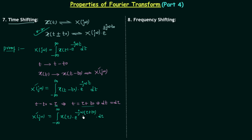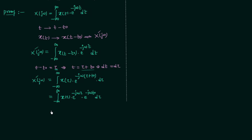The exponent e^(−jω(τ + t0)) can be written as two separate exponentials: e^(−jωτ) multiplied by e^(−jωt0). The term e^(−jωt0) has no τ in it, so it acts as a constant with respect to τ and can be taken outside the integration. We then have e^(−jωt0) times the integral from minus infinity to infinity of x(τ) multiplied by e^(−jωτ) dτ.